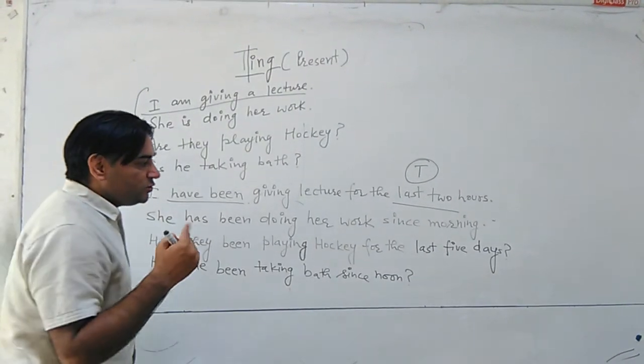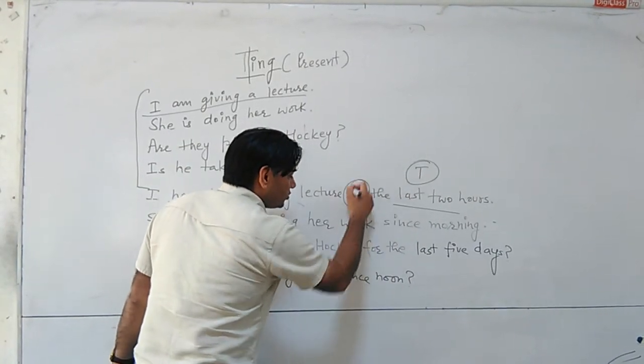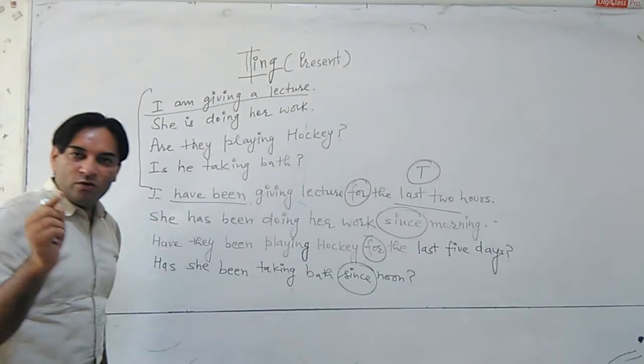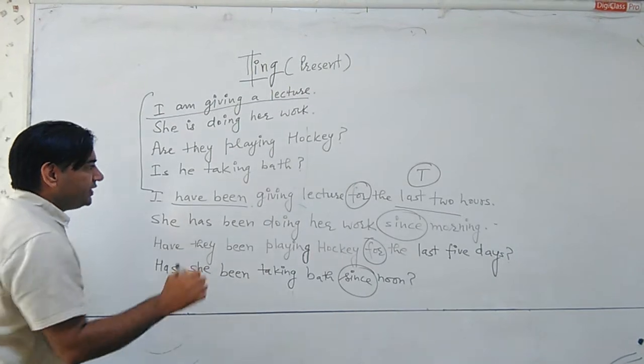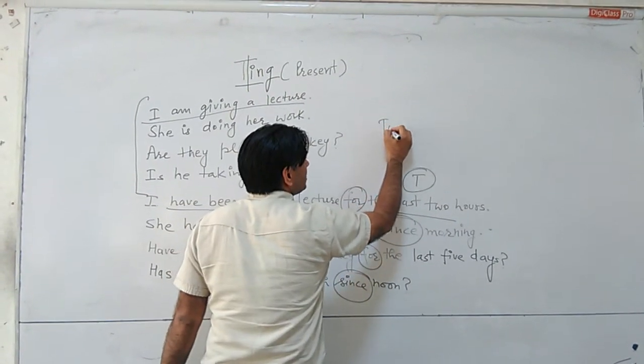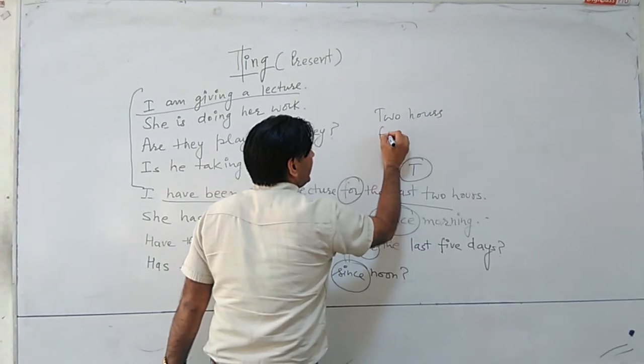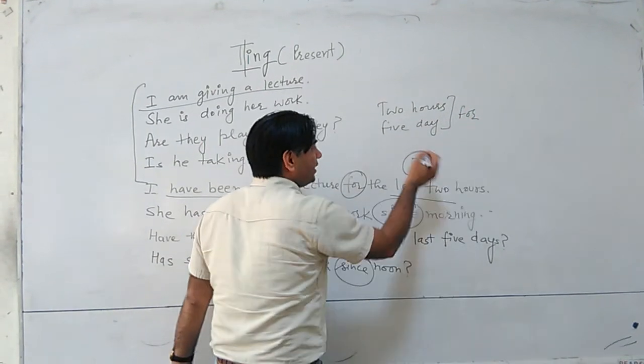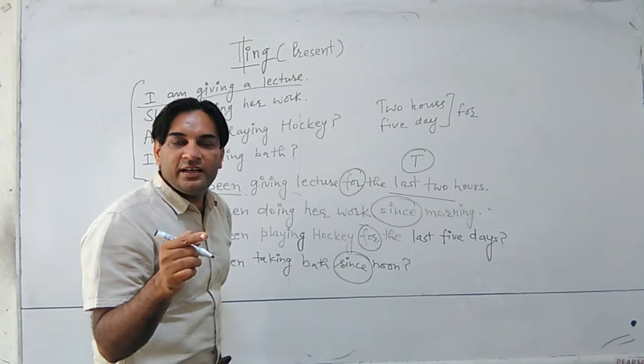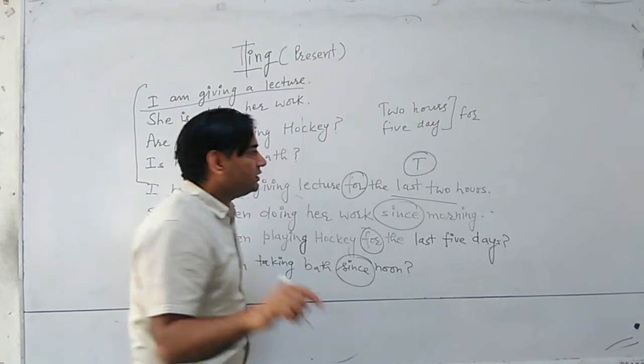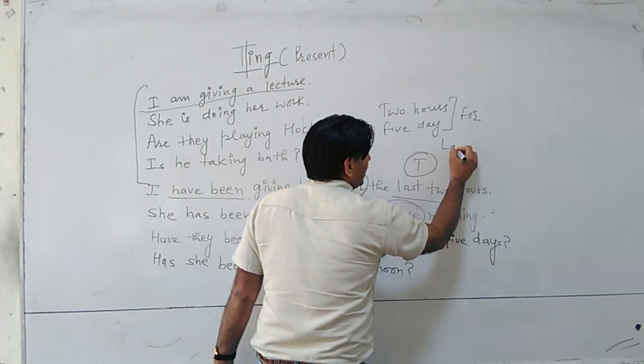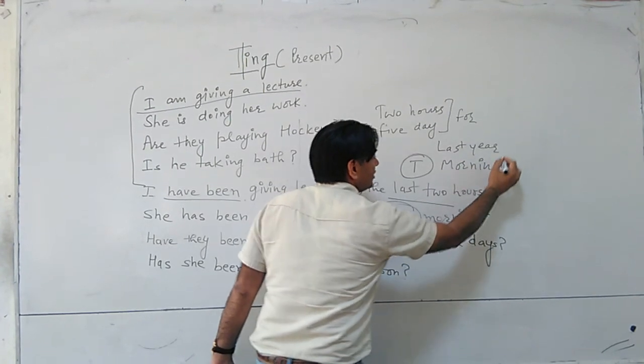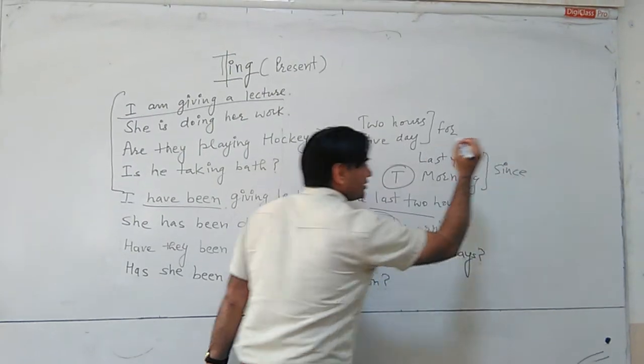The next thing comes now, where will you use for, and where will you use since? When you quote exact part of time like exact part of time like 2 hours, 5 days, you use for. When you quote indefinite time, time is not clear like morning, last year, then you use since.